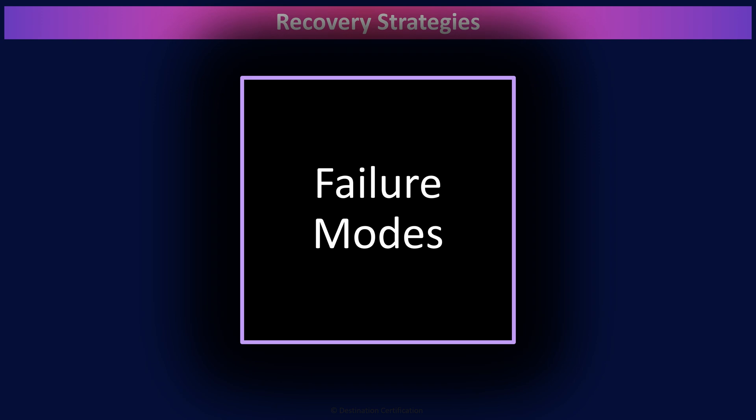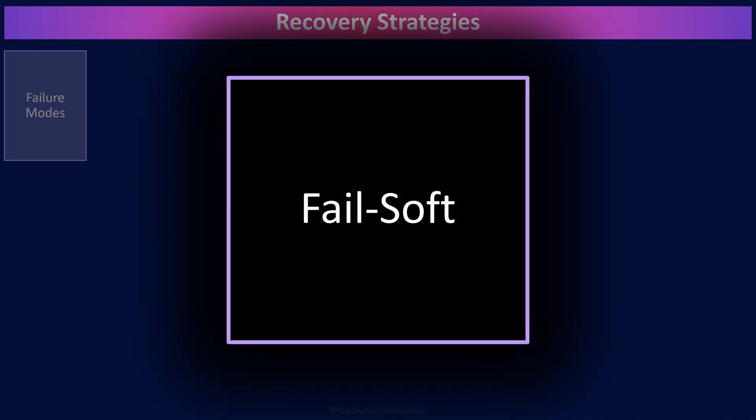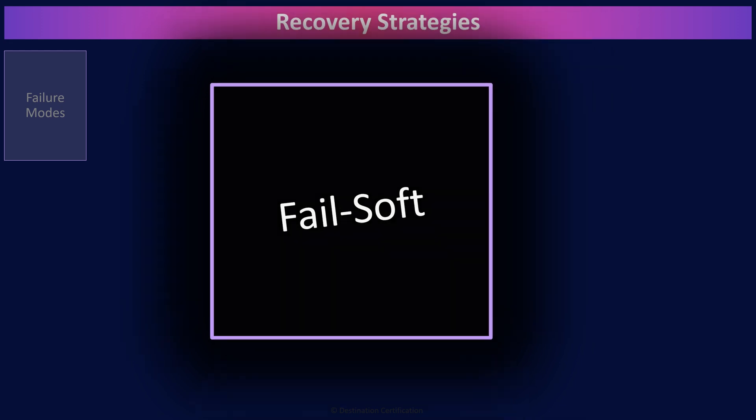Before we get into talking about different recovery strategies, we first have to talk about three different failure modes — three different ways that we can design systems to fail. Fail soft means we design a system to fail to a less secure state. For example, a firewall designed to fail soft might let all traffic through in the event it fails. This is why fail soft is often referred to as fail open.